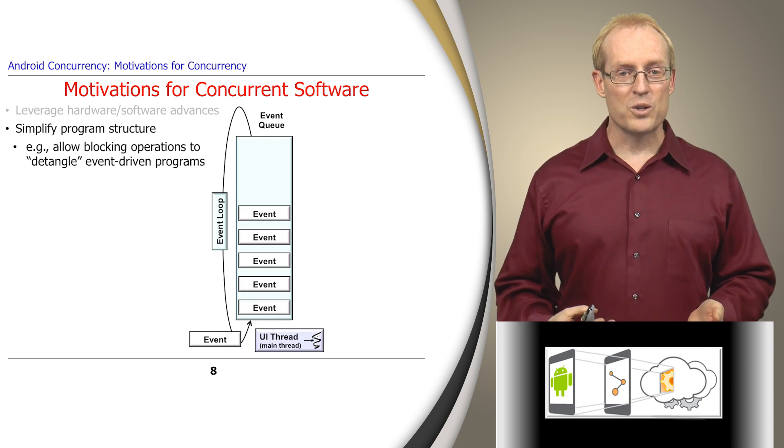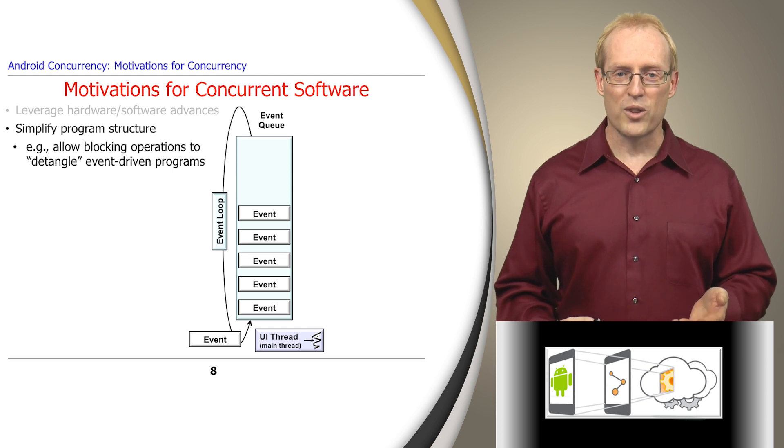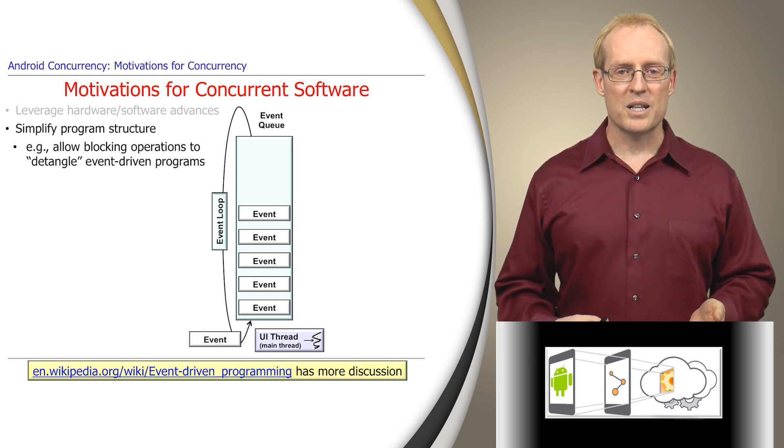Historically, the GUIs in early versions of Windows, MacOS, and Unix were structured using an event-driven programming model, where a single event loop processed user interface events and initiated file and network I/O operations in one thread of control. The link at the bottom of this slide provides more information on event-driven programming.